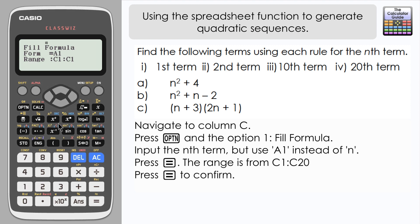So again any instance of n I'm going to substitute with the first value from the n column. So that's A1. So it's A1 squared plus alpha A1 minus 2, and press equals to confirm that. And again I'm starting with cell C1 and I'm going to go to cell C20. Press equals, equals to confirm.